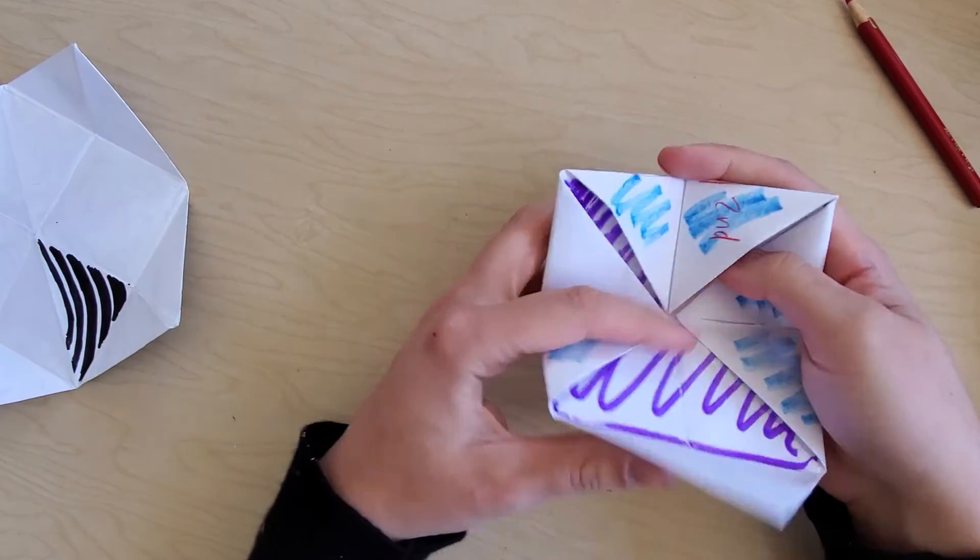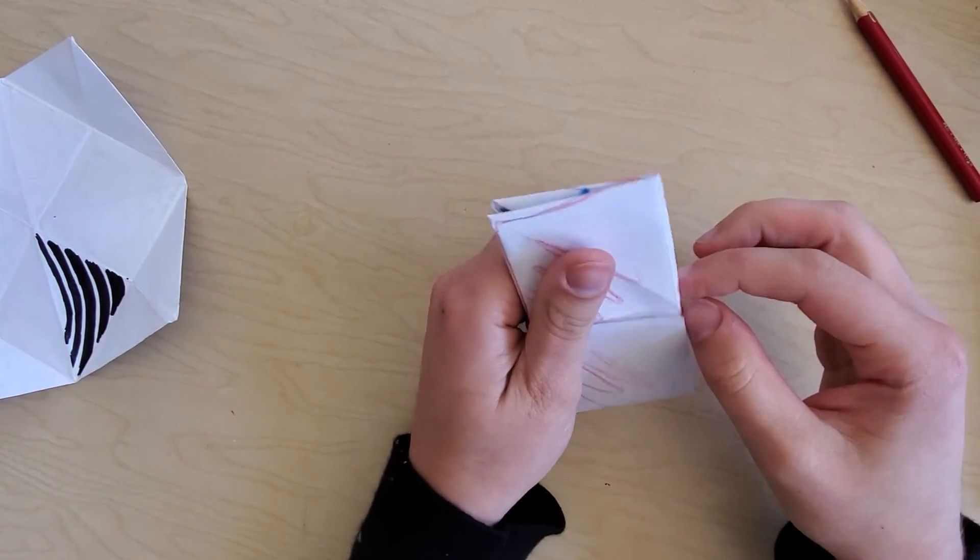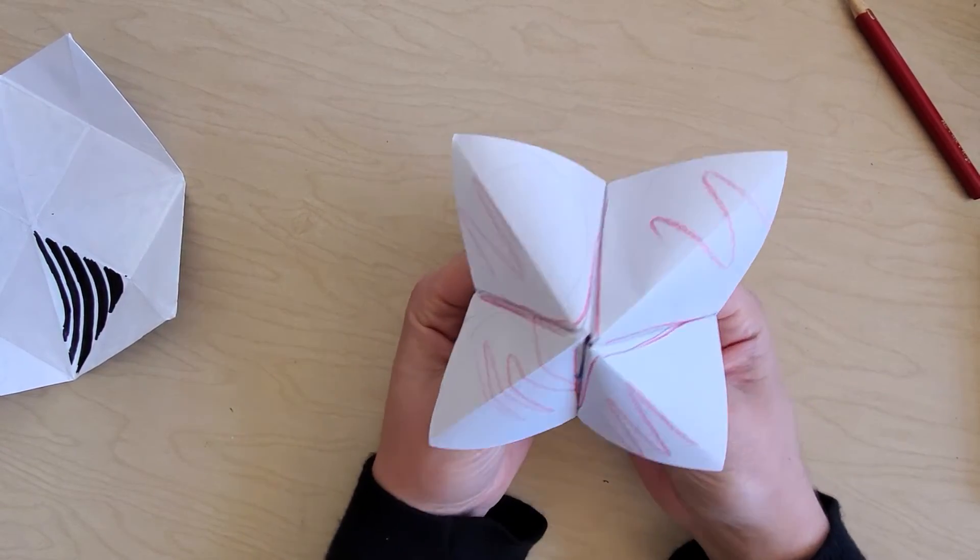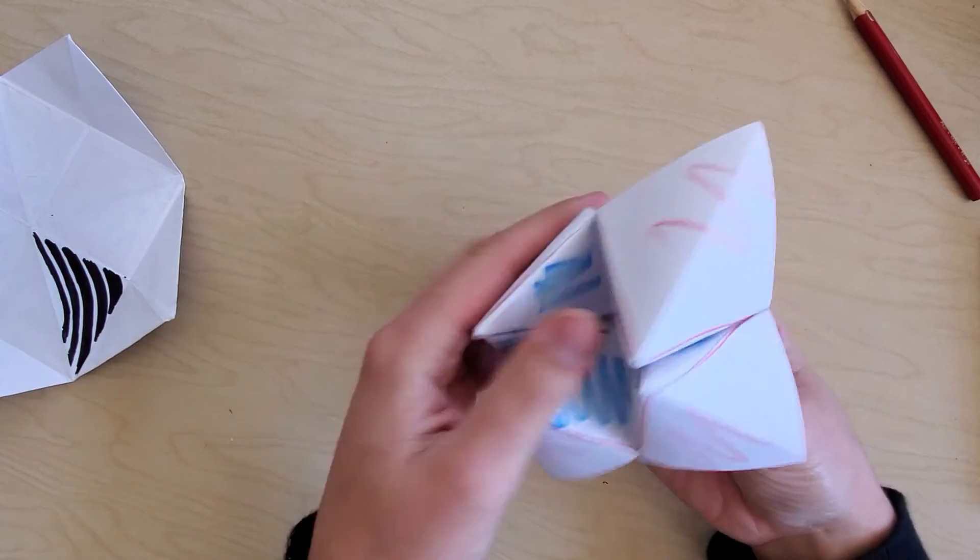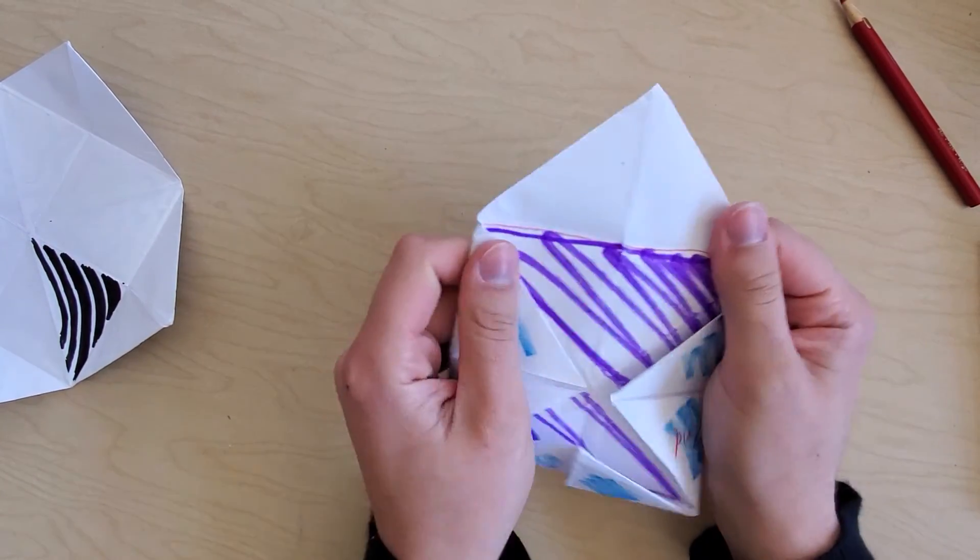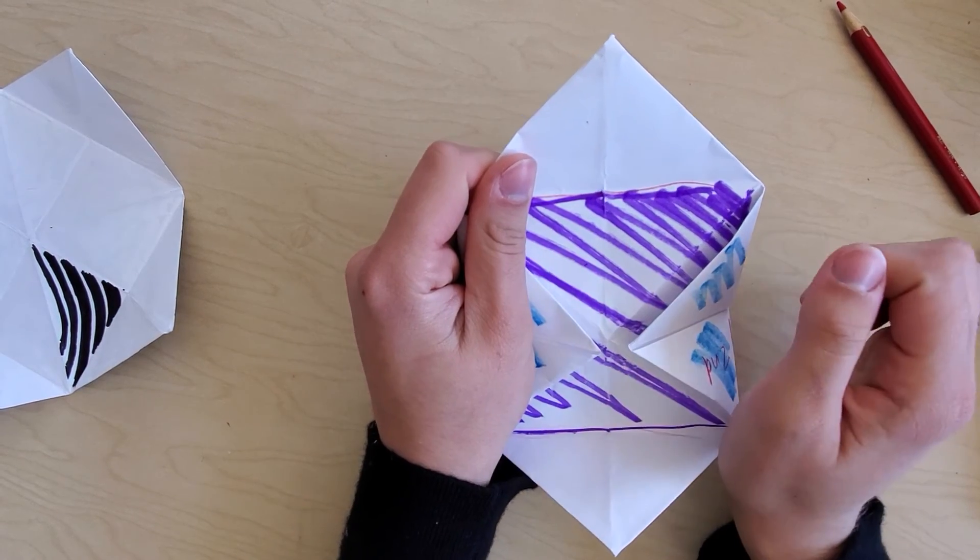So you can see if I put it back together as a fortune teller and stick my fingers in, what you'll see first is the red in the first, and then the blue in the second. And then if I lift it, this is what I'll have for the third portion.